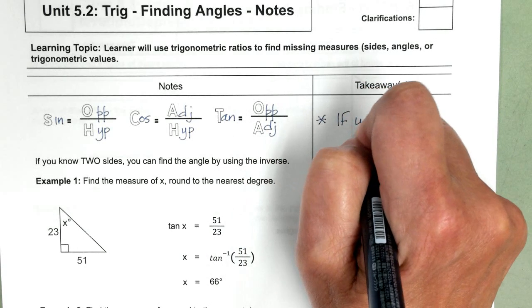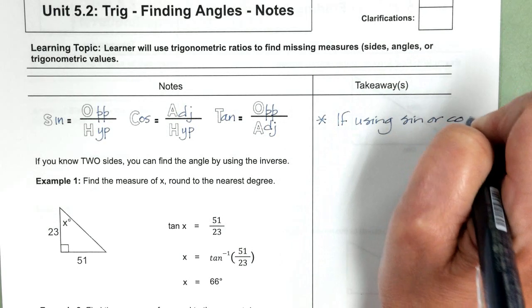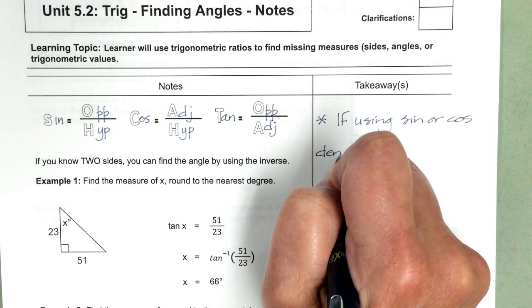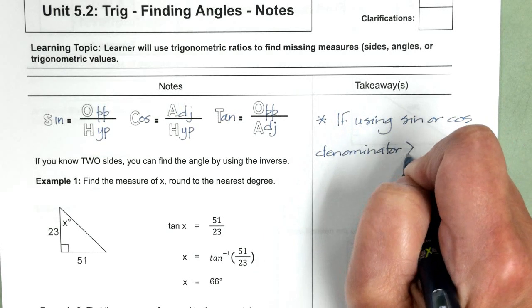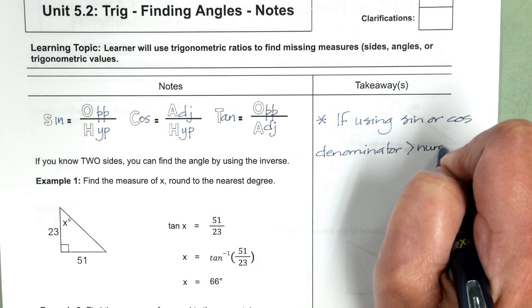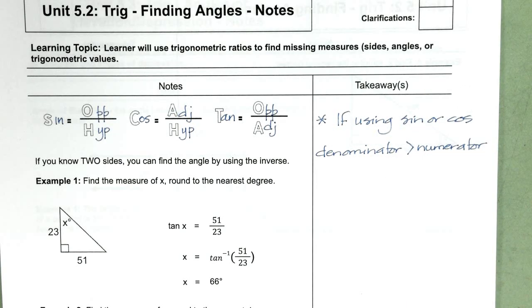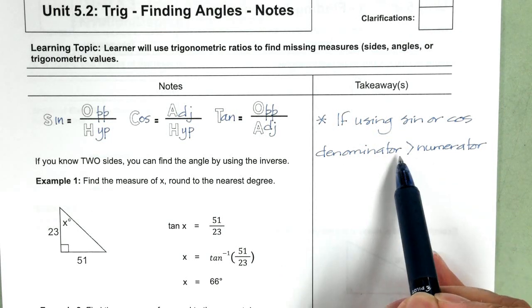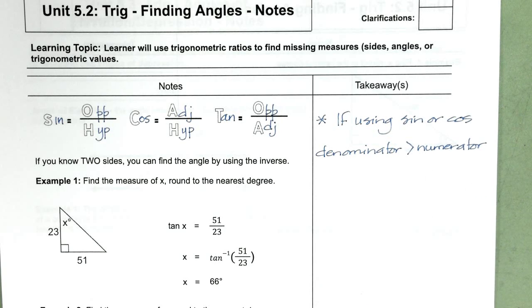If using sine or cosine, the denominator must be greater than the numerator. That's a quick way to tell if you've got that set up properly. The denominator, the value at the bottom, has to be greater than the numerator, the value at the top. If it's not, you're going to get error messages when you use sine or cosine in the calculator.